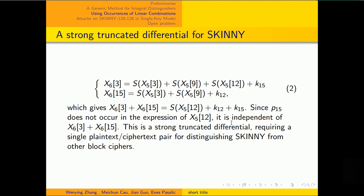We can also use occurrences of linear combinations. Add the first equation to the second one. We can get the third word and the fifth word of X6. The sum of the third word and the fifth word of X6 equals S(X5[12]) plus K12 plus K15.